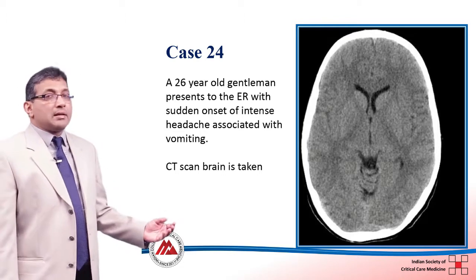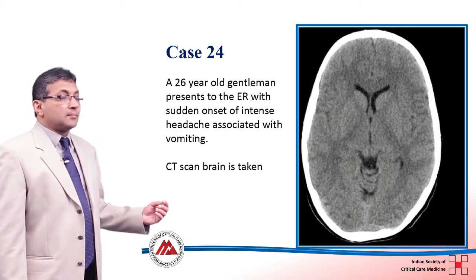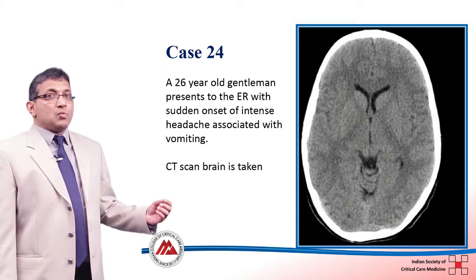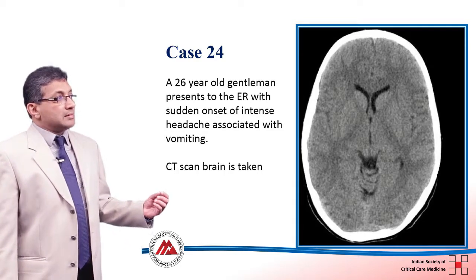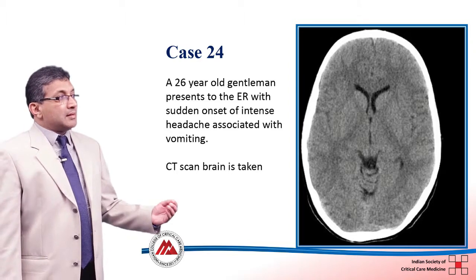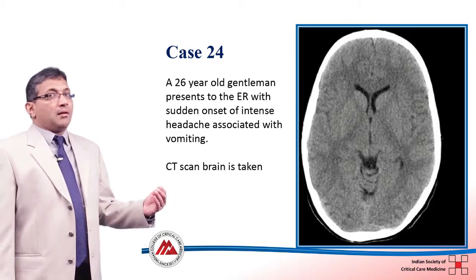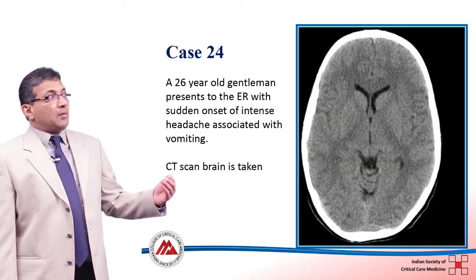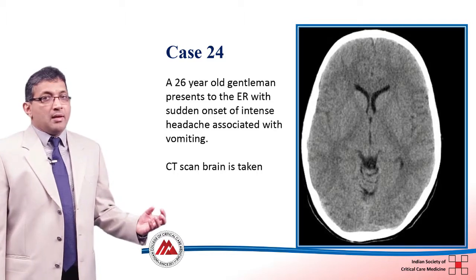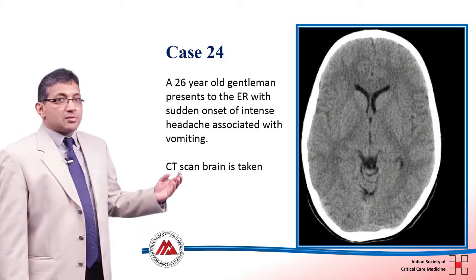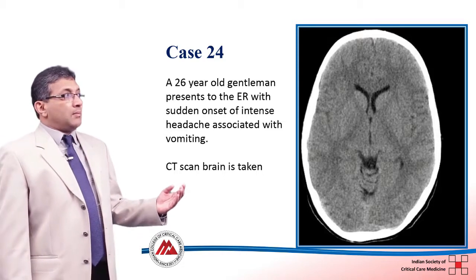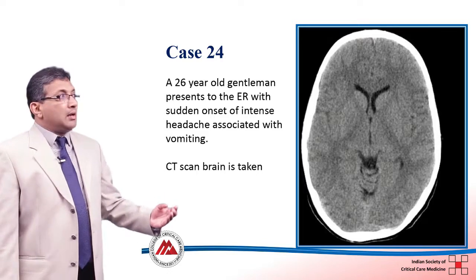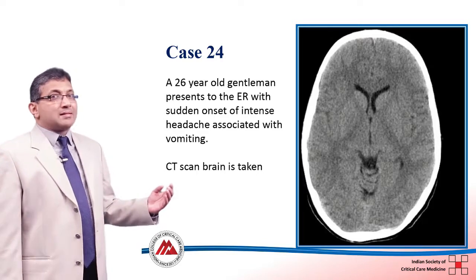A CT brain is usually done without contrast. You are going to see three densities: the brightest, most intense white is the bone — the skull. Next to it you will see gray-colored brain parenchyma, and anything black within the brain parenchyma is usually the CSF. Any abnormalities are contrasted against these three. Blood is usually white in color, but not as dense as the bone.